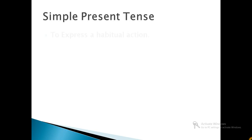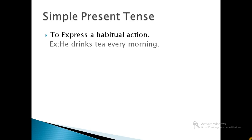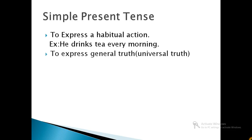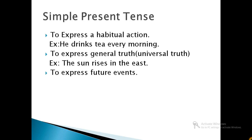Simple present tense is used to express habitual action. For example, he drinks tea every morning. It is also used to express general truths, i.e. universal truth. For example, the sun rises in the east. It is also used to express future events. For example, the train leaves at 5.20.